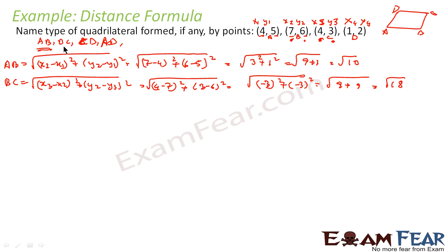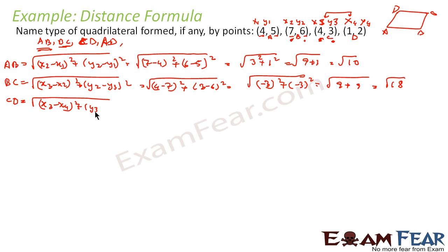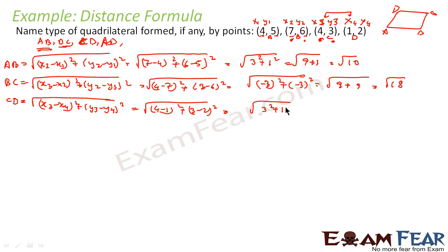Now let us find CD. For CD we take the distance between x3, y3 and x4, y4. This becomes root of (x3 minus x4) squared plus (y3 minus y4) squared. x3 is 4, x4 is 1, so 4 minus 1 squared; y3 is 3 and y4 is 2, so 3 minus 2 squared. This becomes 3 squared plus 1 squared — root of 9 plus 1 — that is root of 10.